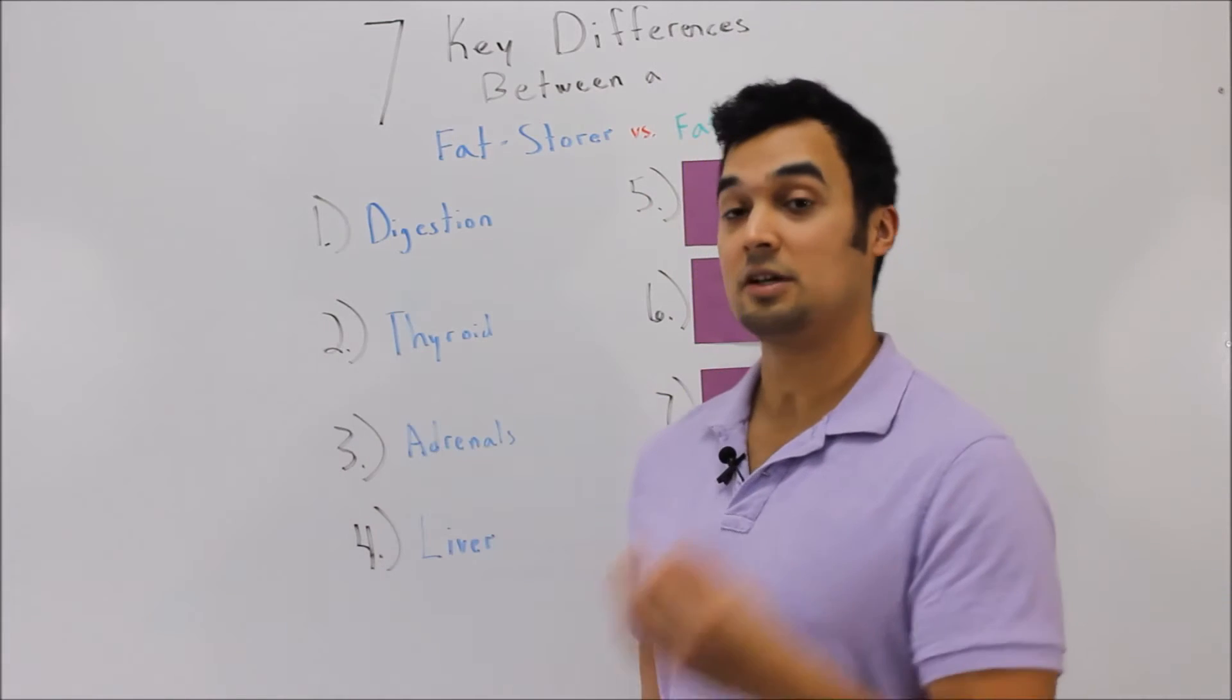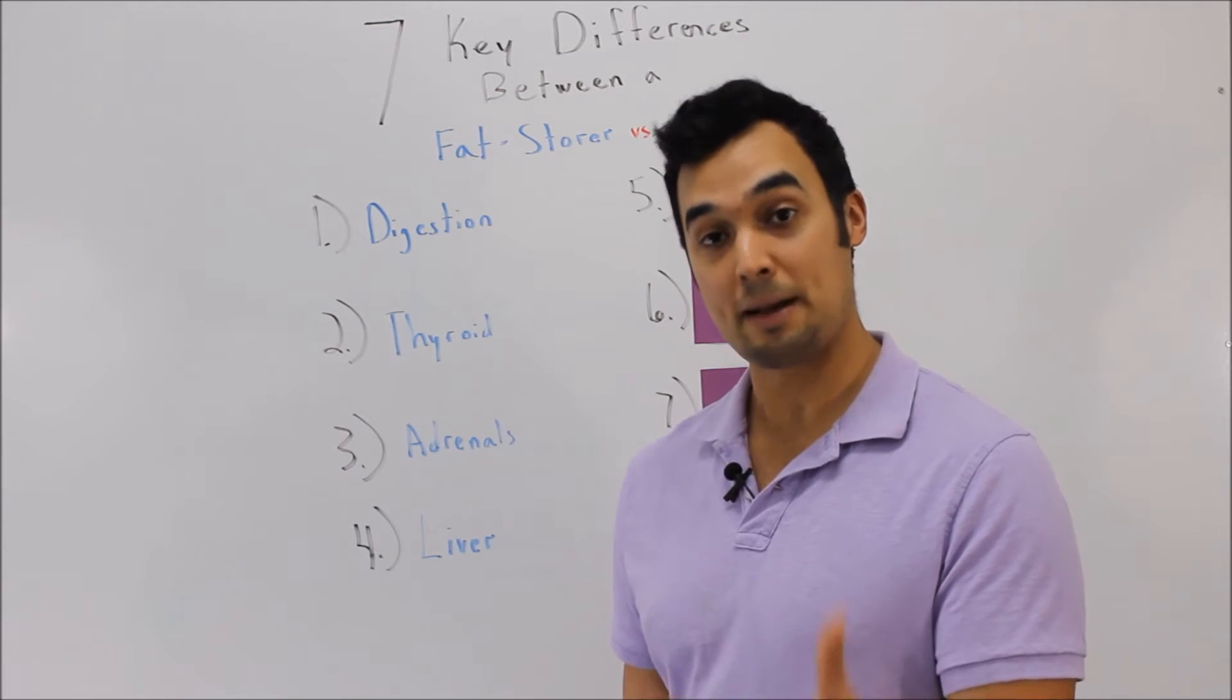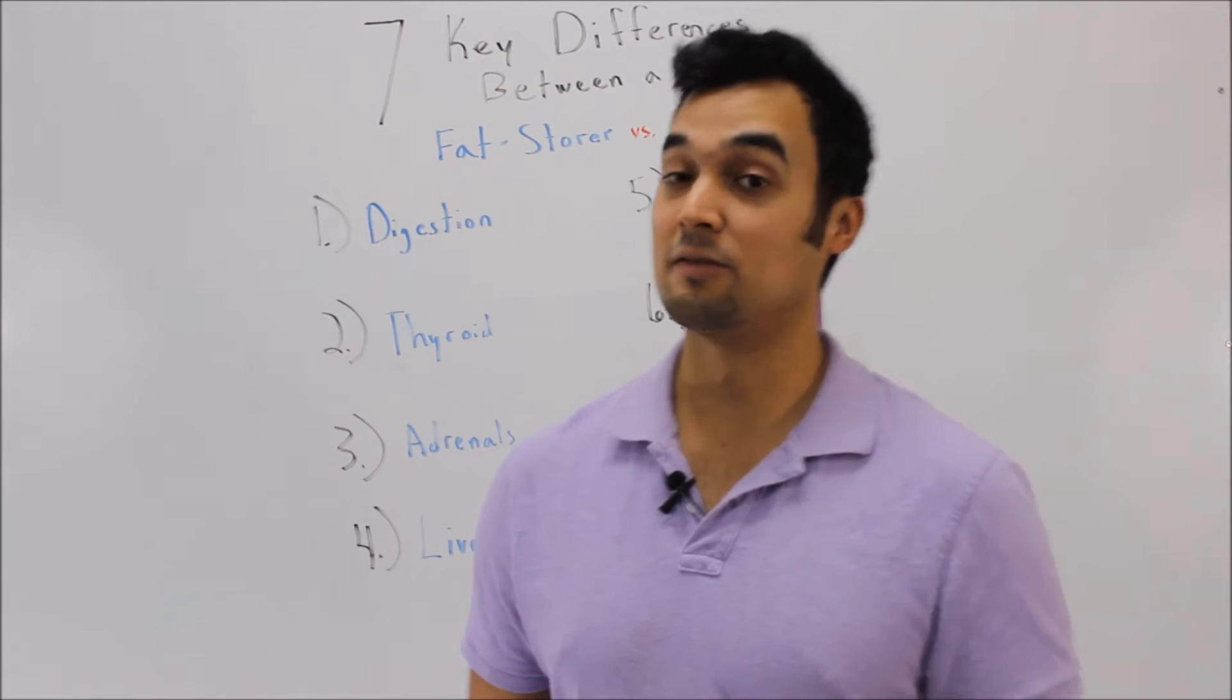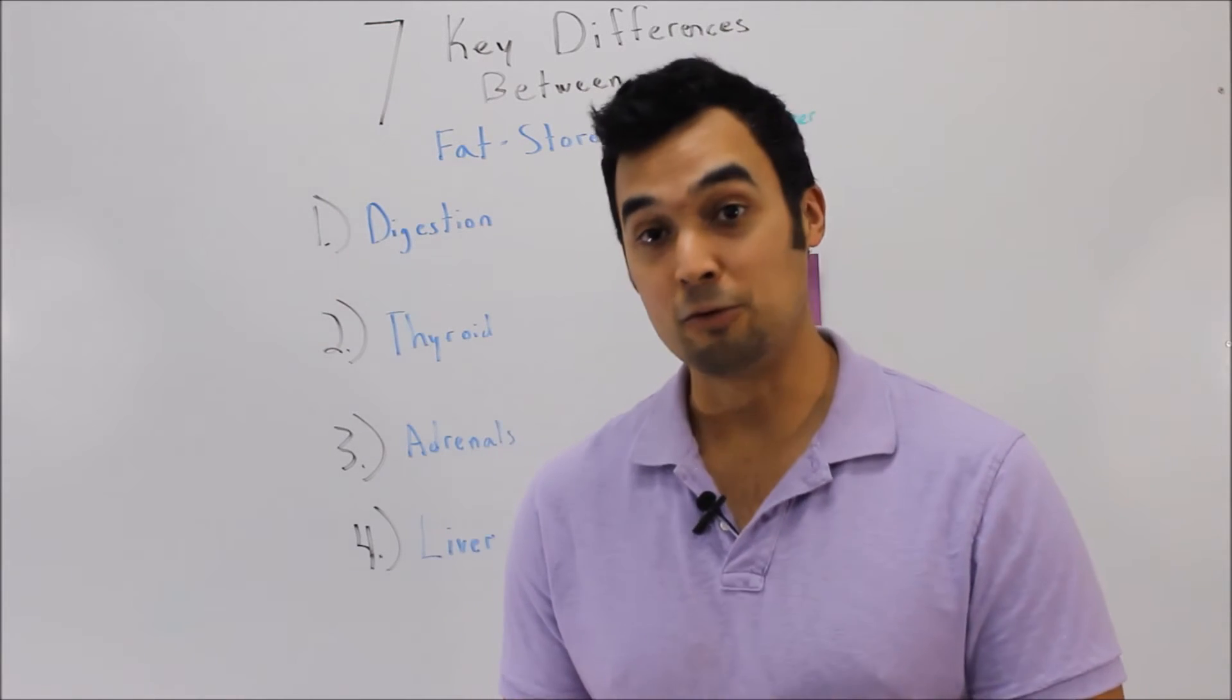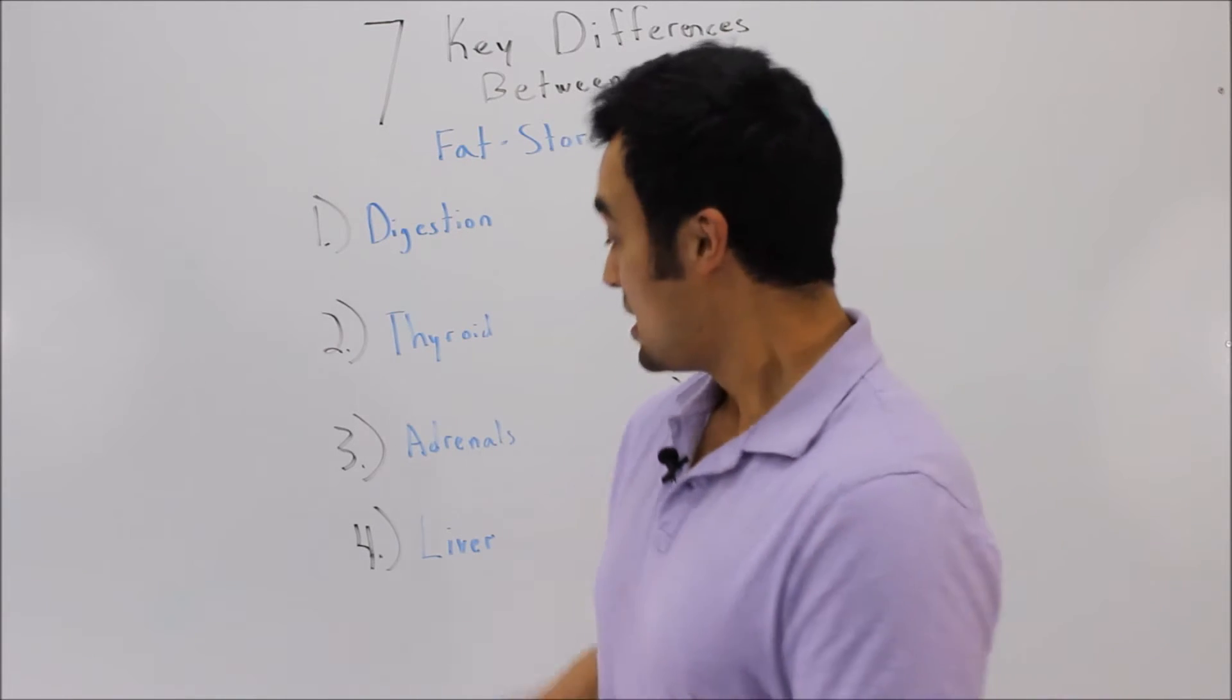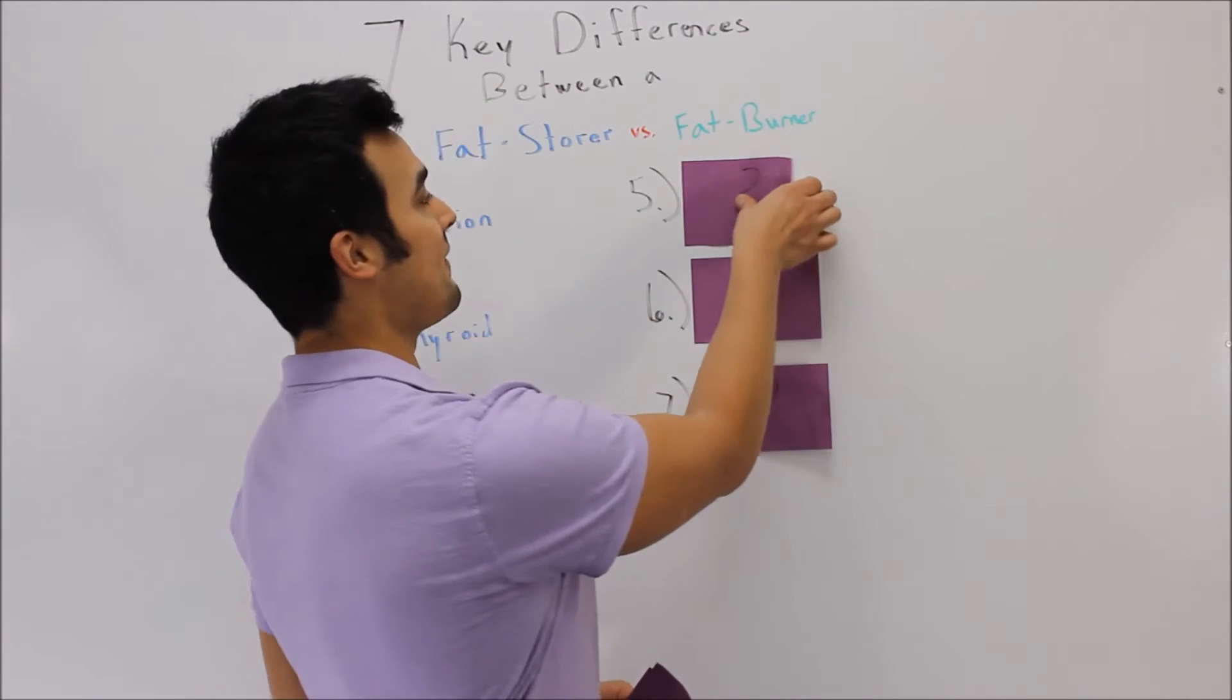You've got to ask yourself, if you have any form of thyroid imbalance or hypothyroidism, do you have a thyroid problem or do you have a liver problem? And then, you've got to ask yourself, what problem is that coming from? Do I have a crappy food problem? Do I have a lack of exercise problem? Do I have a hormonal imbalance? All these things, remember, are connected. So, let's go to number 5.